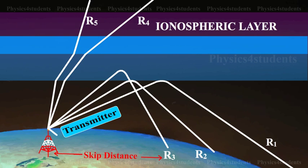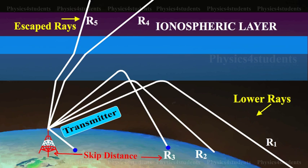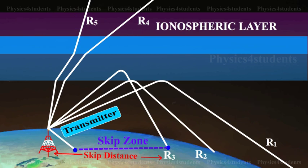The region between the point where there is no reception of ground waves and the point where the sky wave is received is known as skip zone. In the skip zone, there is no reception at all.